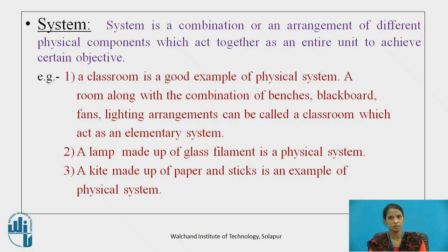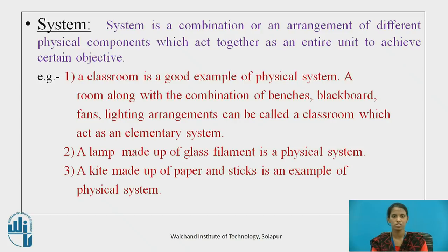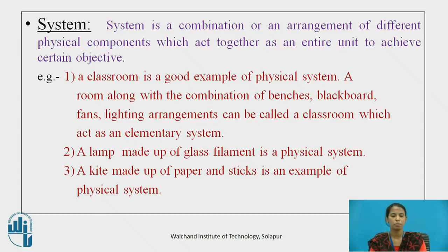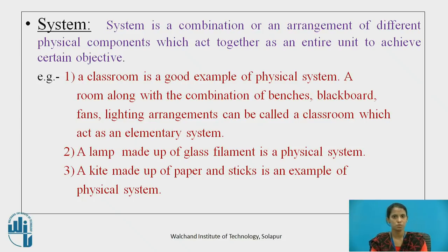What is a system? A system is a combination or arrangement of different physical components which act together as an entire unit to achieve a certain objective. Let's take an example of a classroom. A classroom is a good example of a physical system. A room along with the combination of benches, blackboard, fans, and lighting arrangement can be called a classroom, which acts as an elementary system.